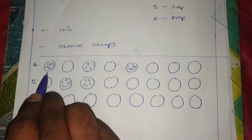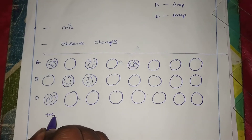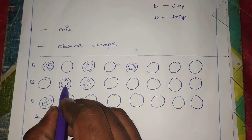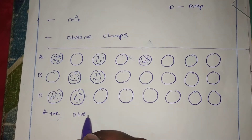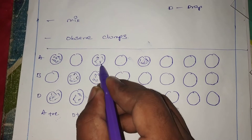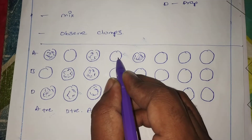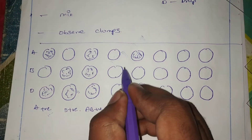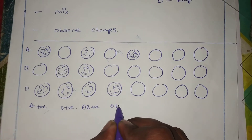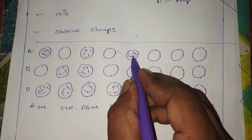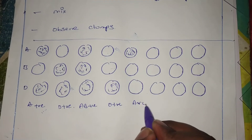For the Rh factor: if A has clumps and D also has clumps, that is A positive. If B has clumps and D also has clumps, that is B positive. If AB has clumps and D also has clumps, that is AB positive. If O — neither A nor B have clumps — but D has clumps, that is O positive. If A has clumps but D does not, that is A negative.